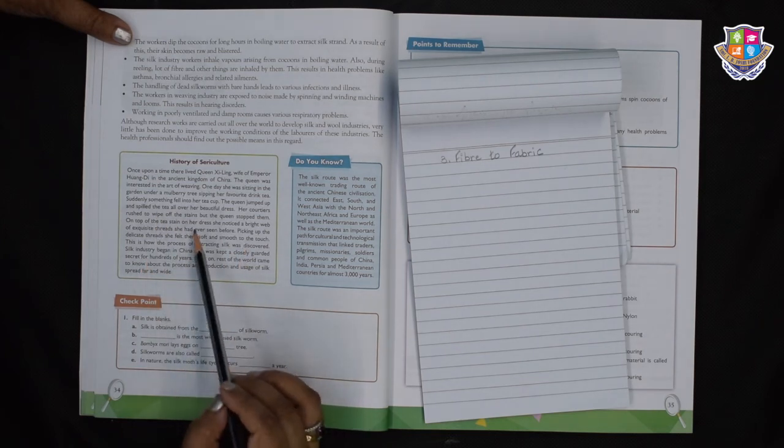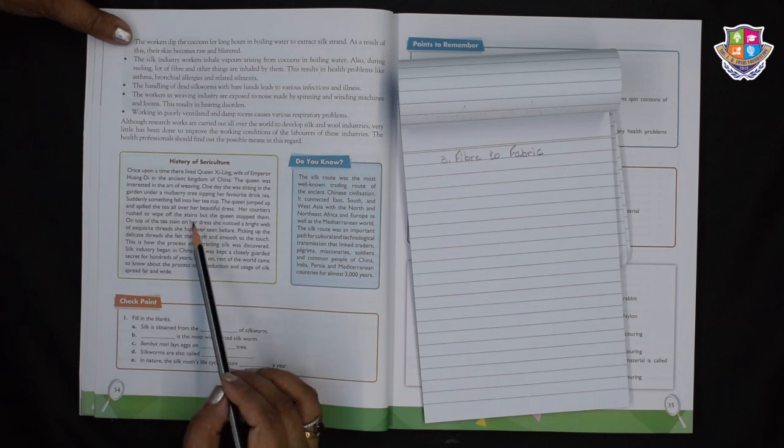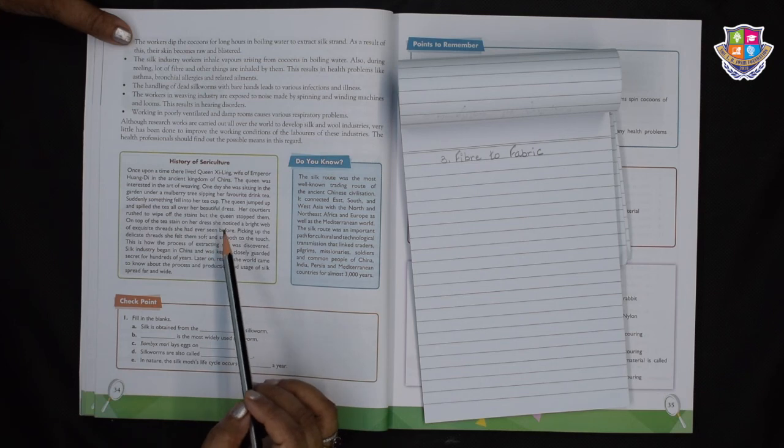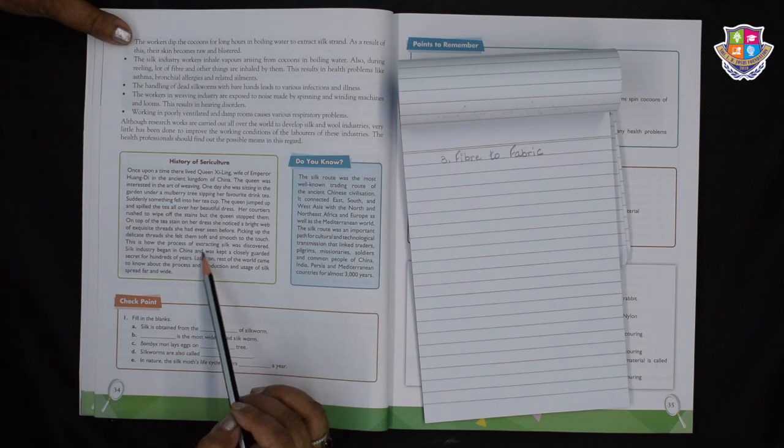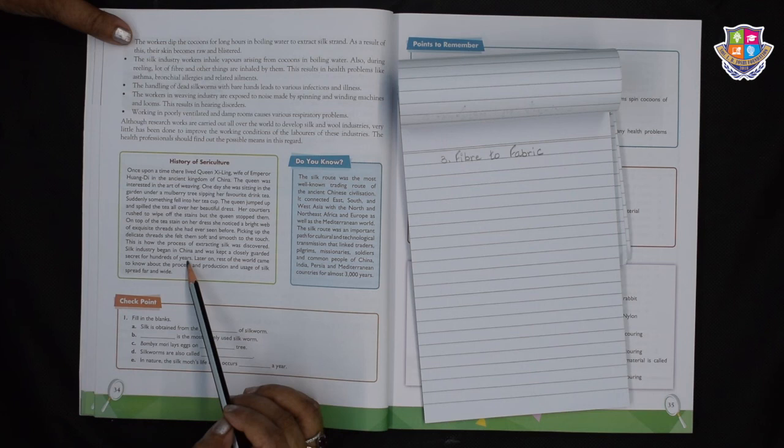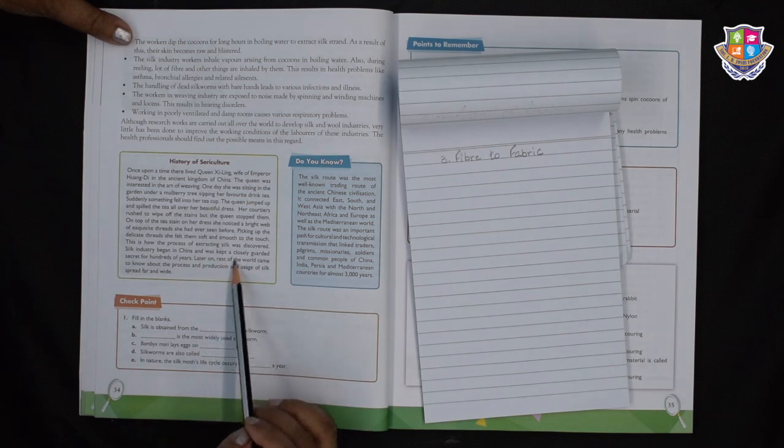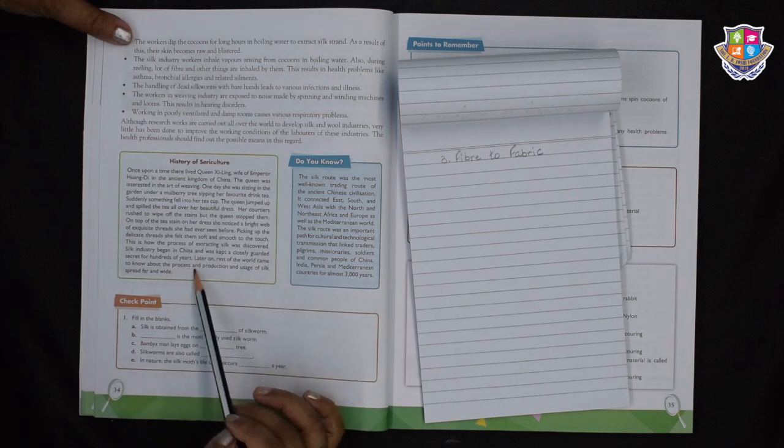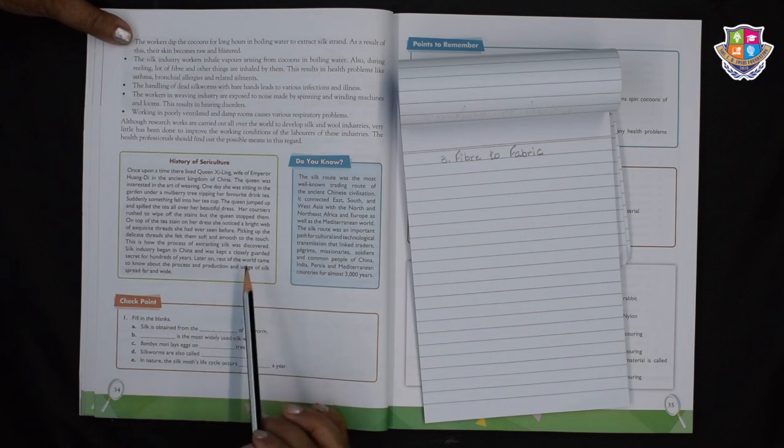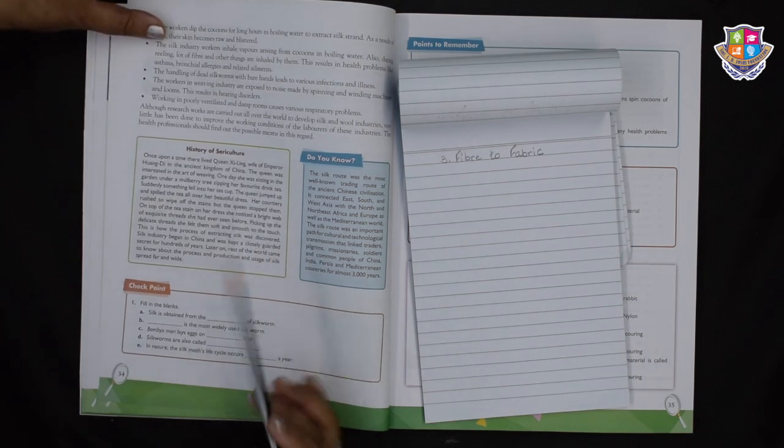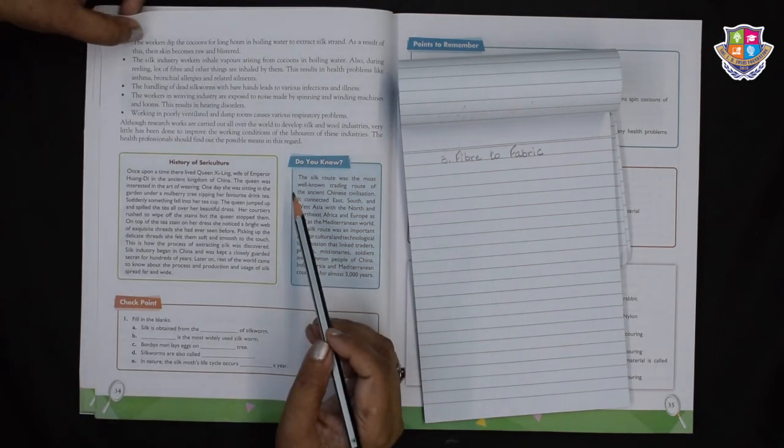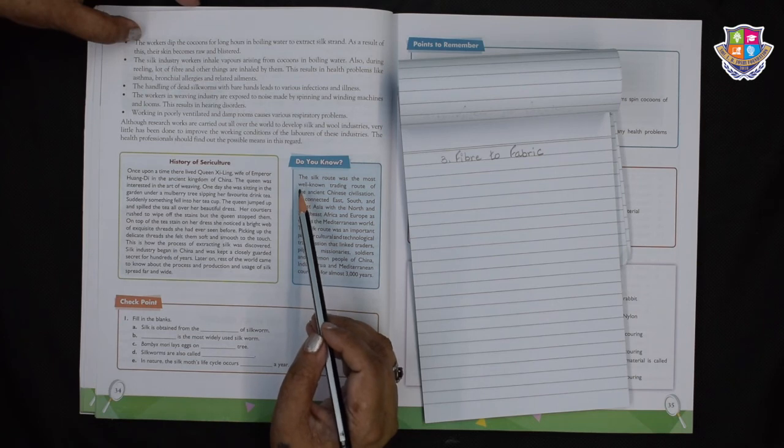This is how the process of extracting silk was discovered. So children, this is an interesting story and it's a fact. So this is how the extracting of silk was discovered. The silk industry began in China and was kept a closely guarded secret for hundreds of years. Later on, the rest of the world came to know about the process and production and usage of silk spread far and wide. So that's how we are enjoying a lot of silk cloth nowadays.